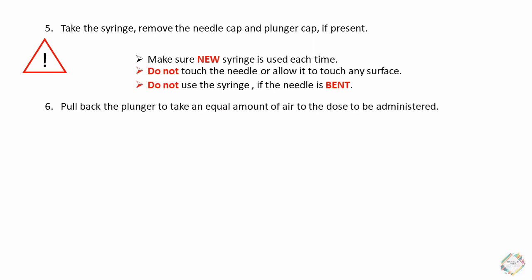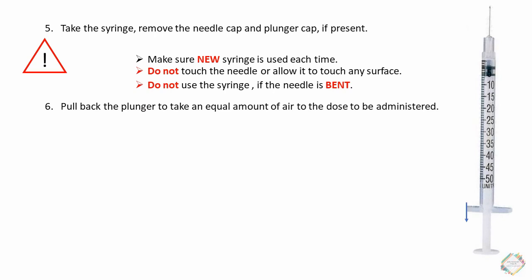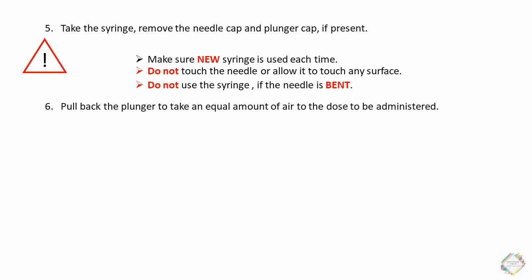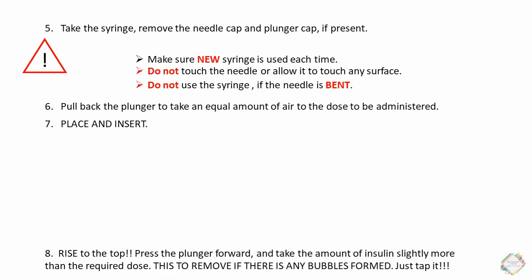Pull back the plunger to an equal amount of air as the dose to be administered — for example, if taking 15 units, pull back the plunger to approximately 15 units. Then place the vial on a flat surface and insert the syringe at 90 degrees with the plunger already pulled back. Rise to the top, press the plunger forward, and draw slightly more insulin than required, as bubbles may form. Tap to remove any bubbles and adjust to the correct dose.